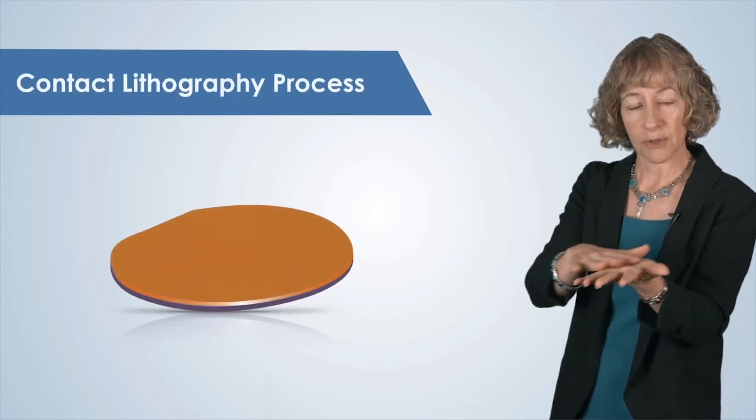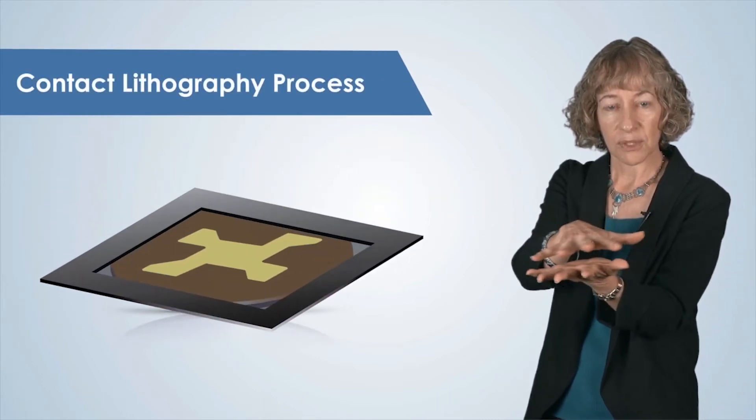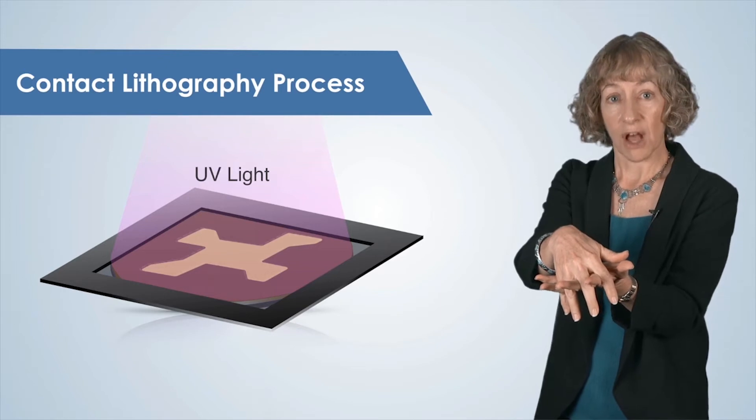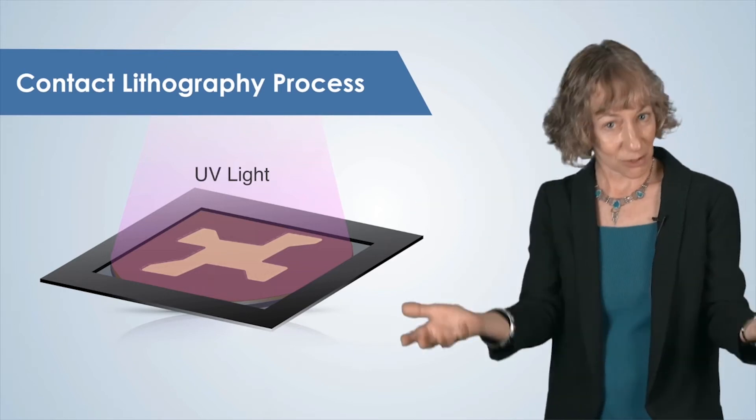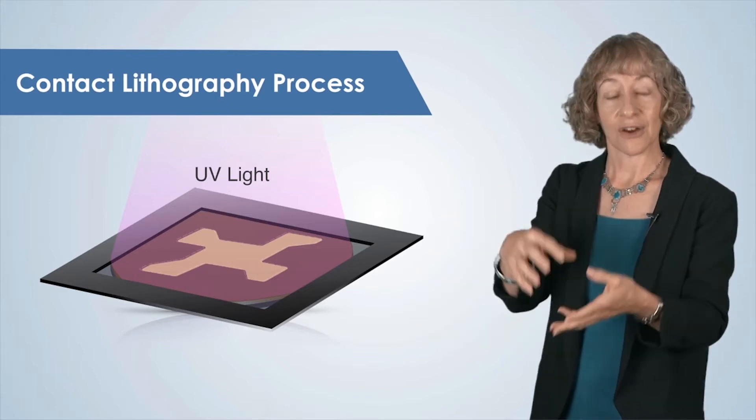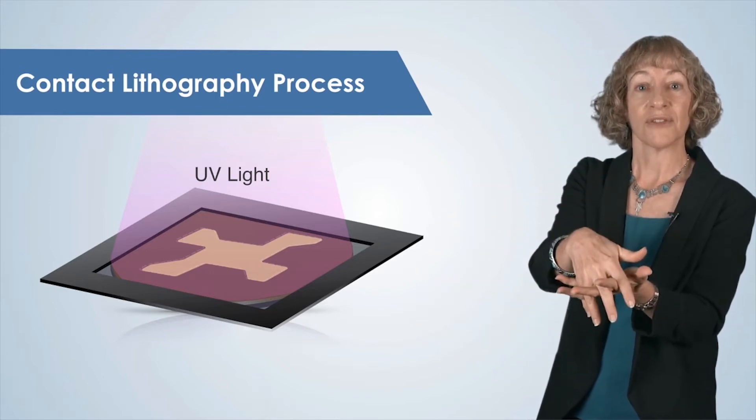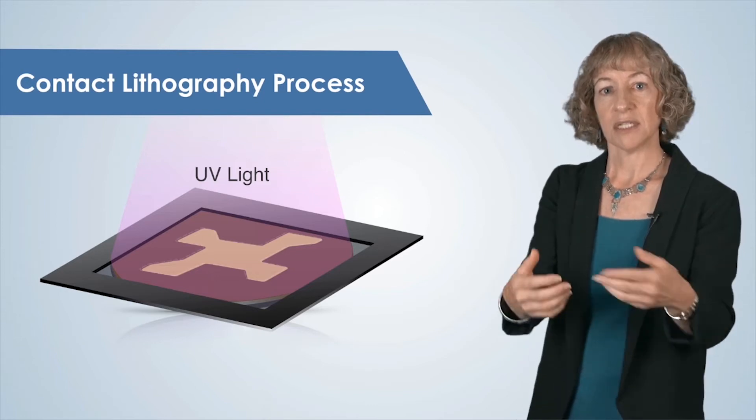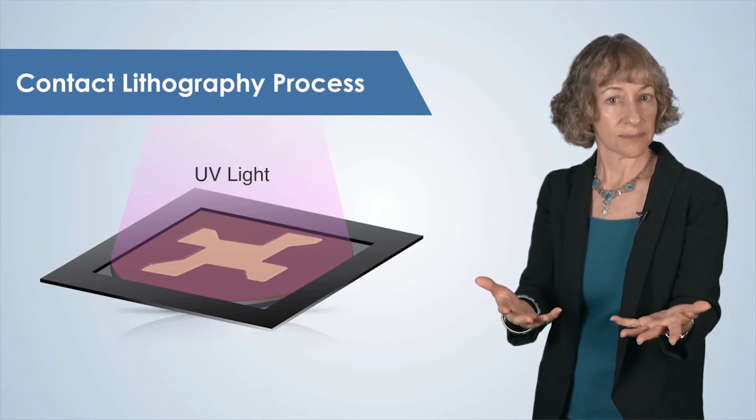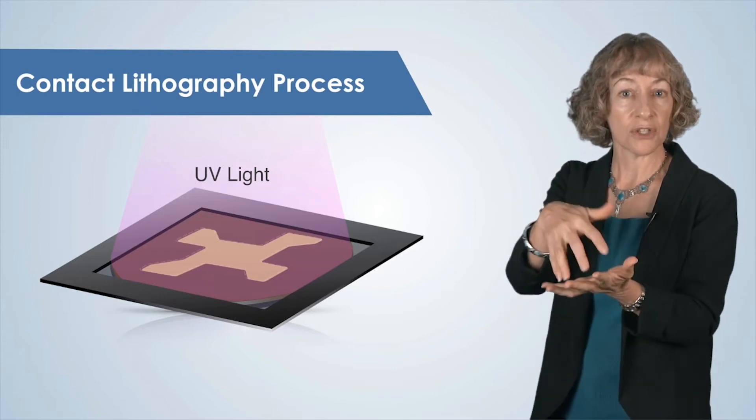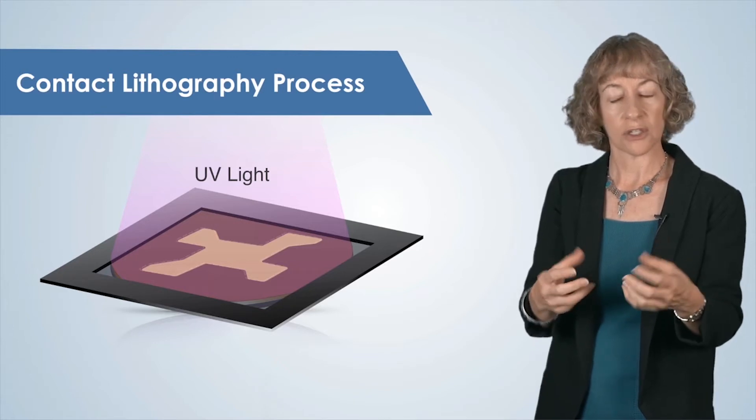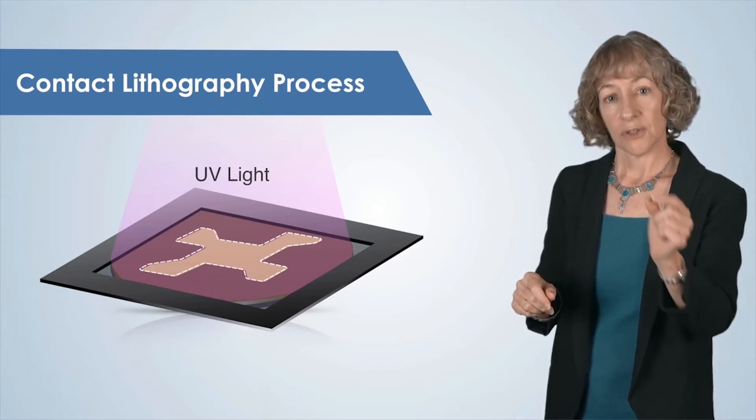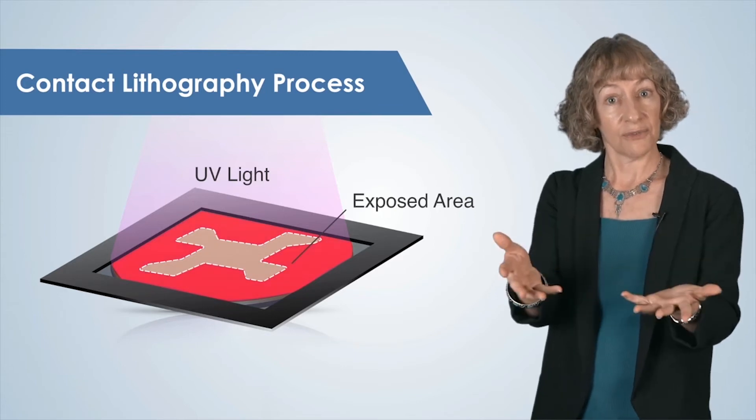Now that our substrate is coated with photoresist, we bring the mask into contact with the photoresist after it's aligned using the mask aligner. We then illuminate the mask from above with ultraviolet light. The UV light passes through the transparent glass portions of the photomask, and the areas of the photomask containing metal will block the UV light. So we're essentially casting a shadow onto the photoresist, where the shape of the shadow is defined by the pattern on our photomask. The portions of the photoresist that are exposed to the UV light will undergo a chemical change that's indicated here with dotted white lines. Remember, photoresist is sensitive to light, so this light-induced chemical change creates a pattern in the photoresist.